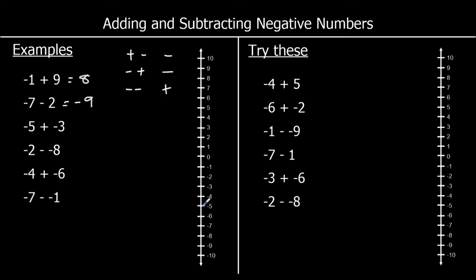Negative 5 is our starting point, plus negative 3. Plus a negative is the same as taking away, so negative 5 take away 3 — that's negative 8. The next one says negative 2 take away negative 8. When we take away a negative, we actually go up — we plus. So it's negative 2 plus 8, which gets us to positive 6. And negative 4 plus a negative 6 — plusing a negative is the same as taking away 6, so negative 4 take away 6 gets us to negative 10.